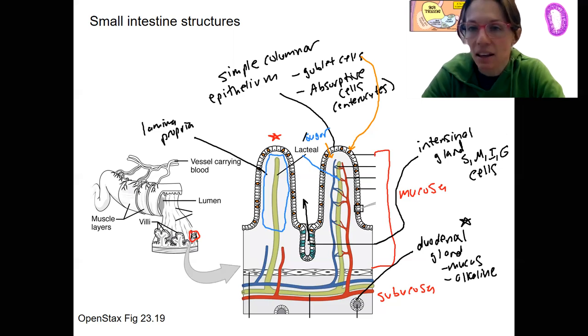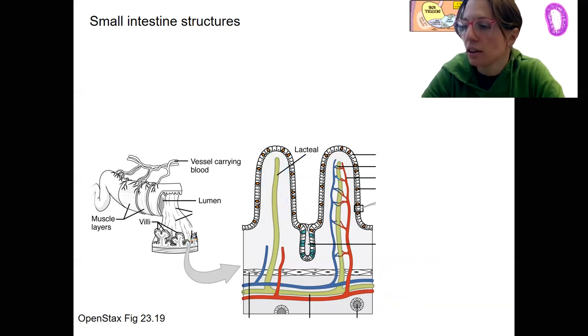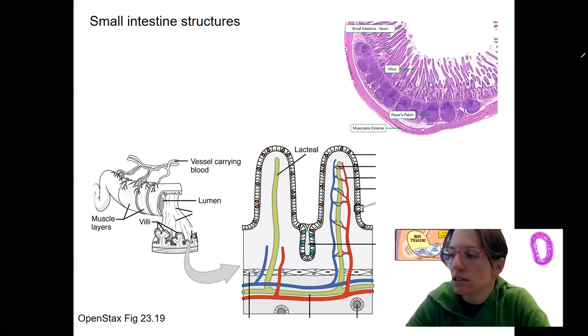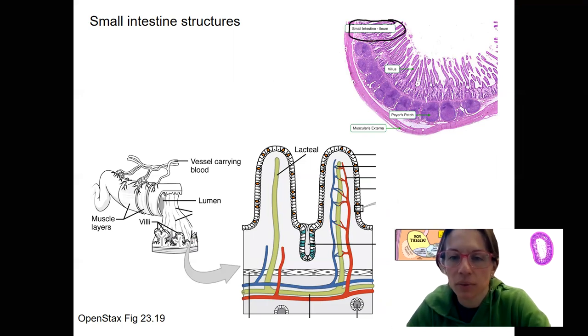The last thing I want to show you on this slide is Peyer's patches. These are typically further down from the duodenum. So this would be ileum. Here we go. More distal ileum. So toward the end of the small intestine. And these are Peyer's patches, which are lymphatic tissue.